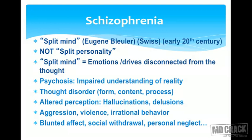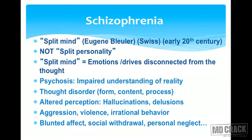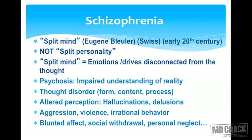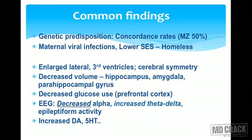Psychosis is one important manifestation in schizophrenia: there is impaired understanding of reality, a thought disorder affecting form, content, and process of thought, and altered perception leading to hallucinations or delusions. There may also be aggression, violence, irrational behavior, blunted affect, social withdrawal, and personal neglect.